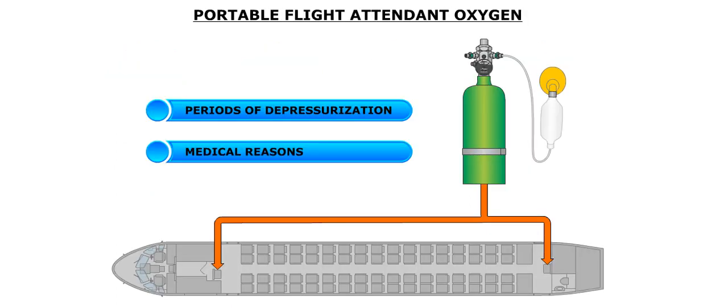A portable oxygen bottle, located under each cabin attendant seat, supplies oxygen through a continuous diluted flow mask to both cabin attendants. These portable bottles can be used for periods of depressurization or for passenger medical purposes.